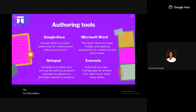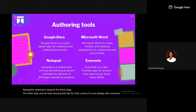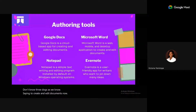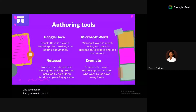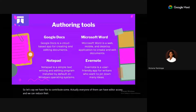Authoring tools include Google Docs, Microsoft Word, Notepad, and Evernote. Google Docs is built by Google to create and edit documents. A big advantage is that you can access it anywhere — on your PC or the mobile app. It's also very useful for team-based projects, where multiple people can have editor access, add comments, and see version history of changes.